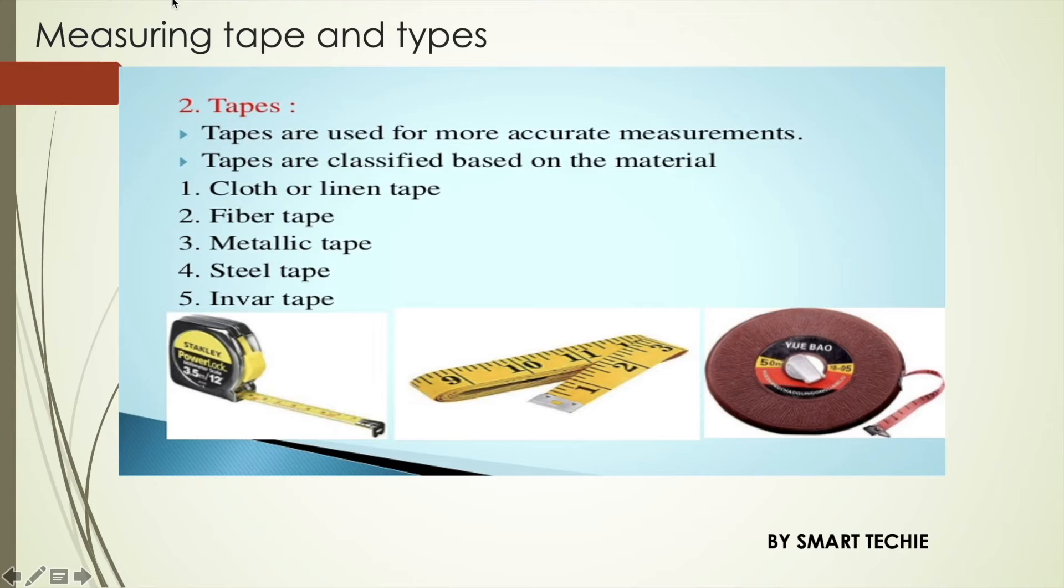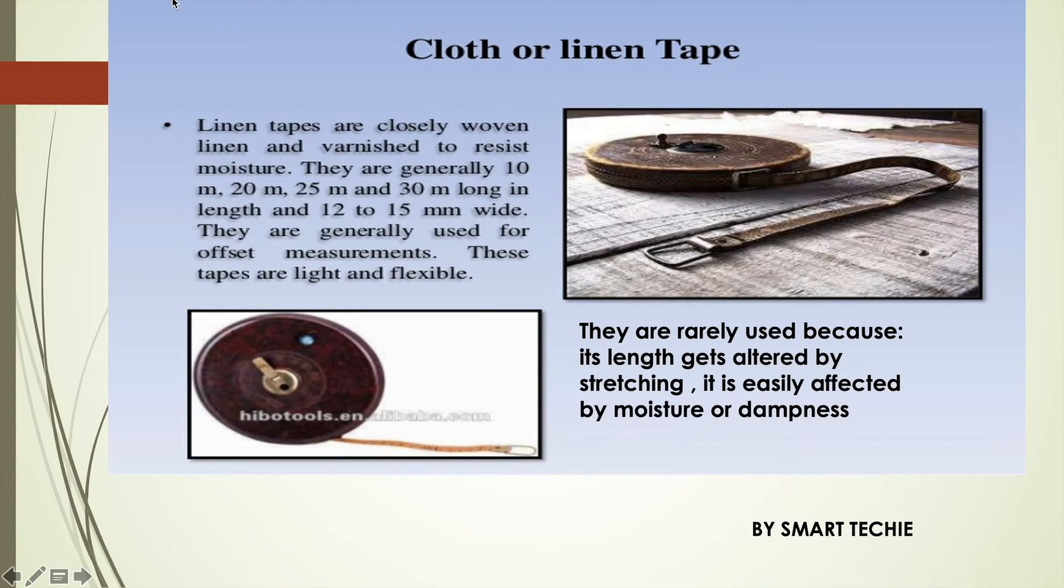Tapes are used for more accurate measurements and are classified according to the material of which they are made. Cloth tape are 12 to 15 mm wide. They are light and flexible and are used for measurements such as offsets. These tapes are available in length of 10, 20, 25 and 30 meters. These tapes are rarely used for making accurate measurements because its length gets altered by stretching. It is easily affected by moisture or dampness.